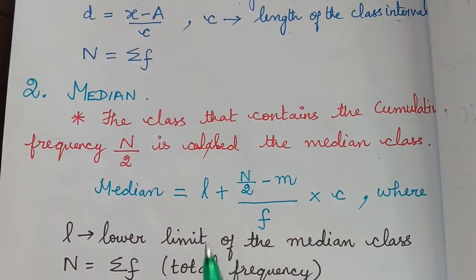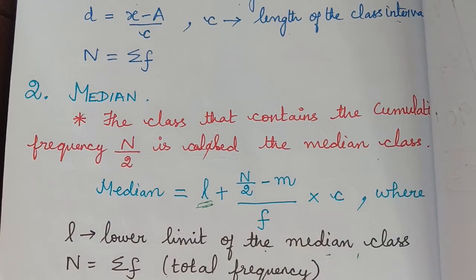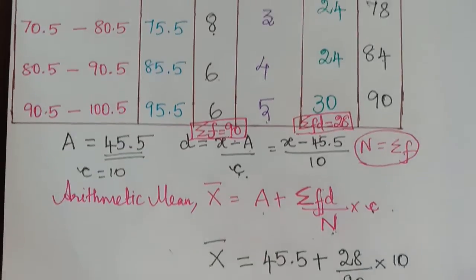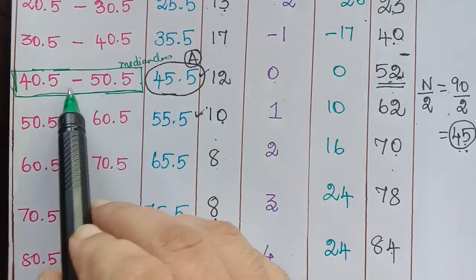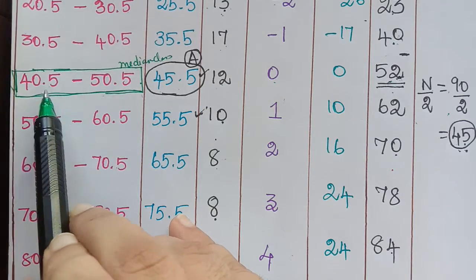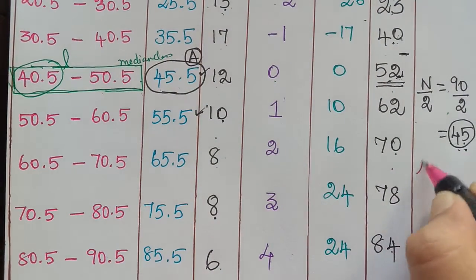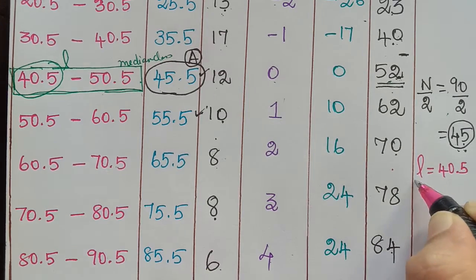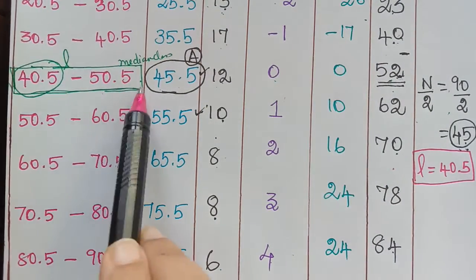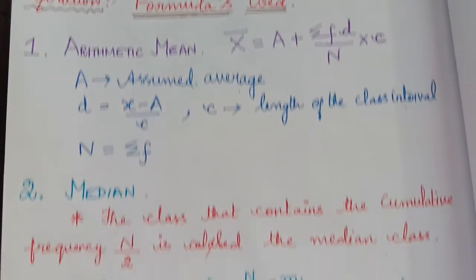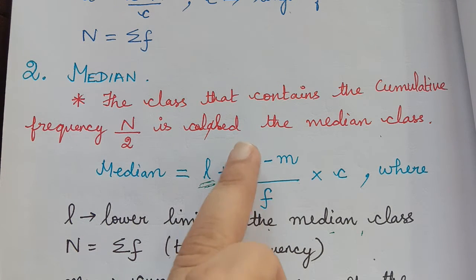Now let's look at the formula for median. First, we have l, which stands for the lower limit of the median class. Looking at the median class, the lower limit is 40.5, so the value of l is 40.5. Next in the formula we need n/2: since n is 90, n/2 equals 45.